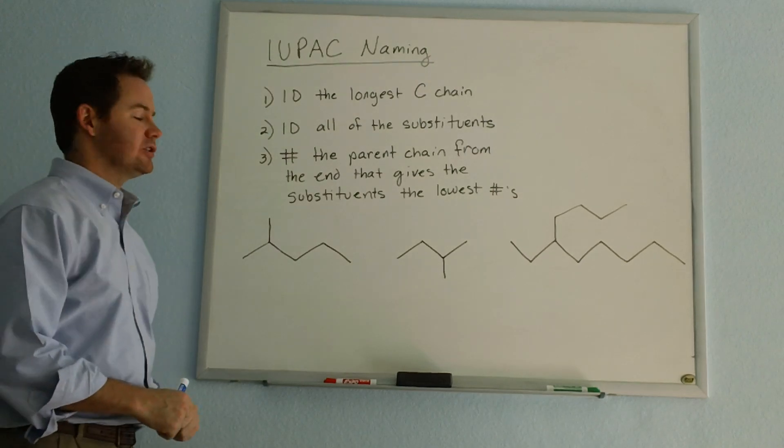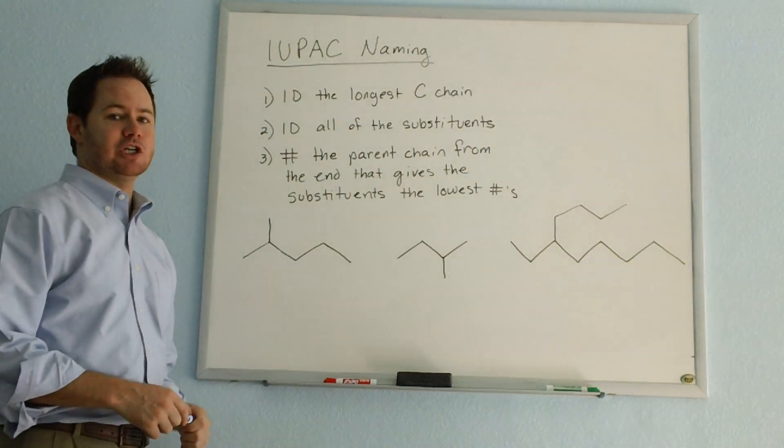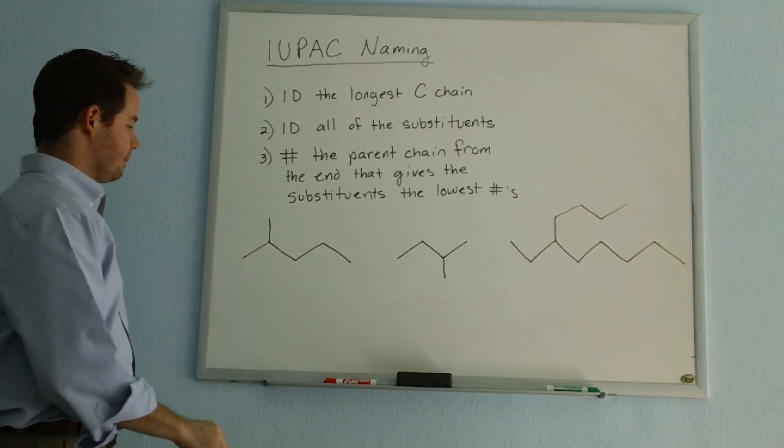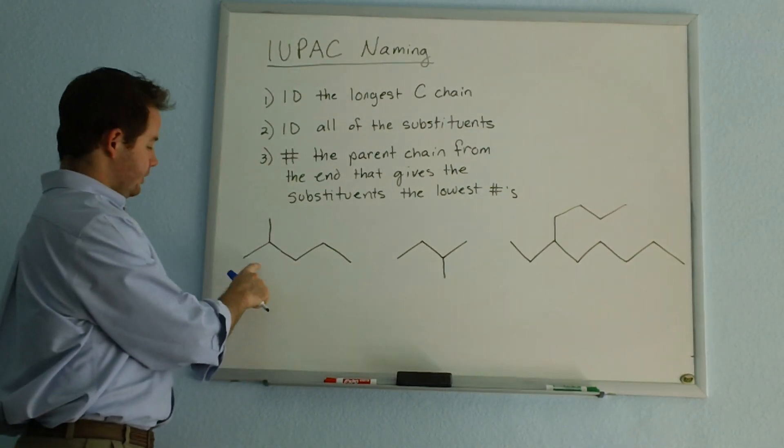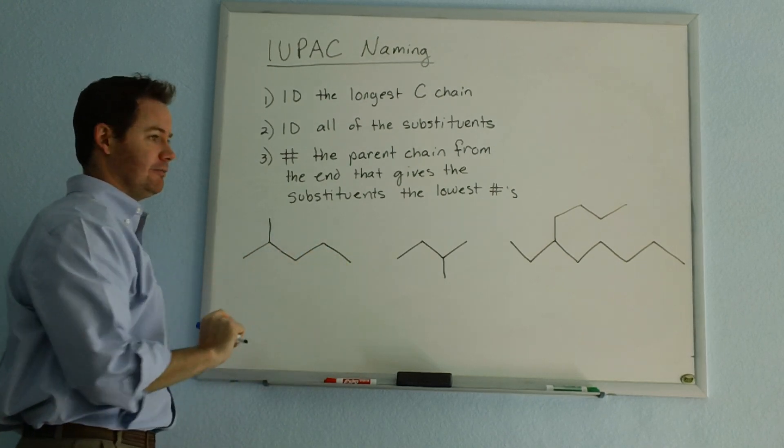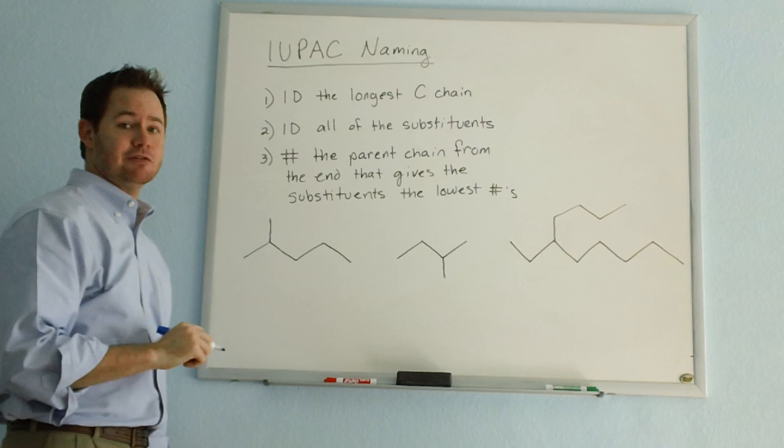Our first rule is to identify the longest carbon chain. So let's see how that applies in this first example. If we take a look here, we count one, two, three, four, five. Our longest carbon chain has five carbons.